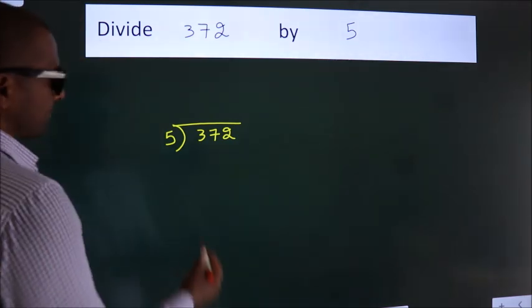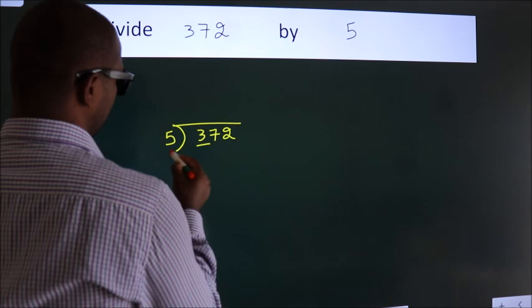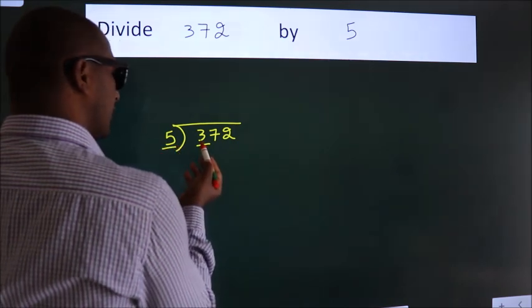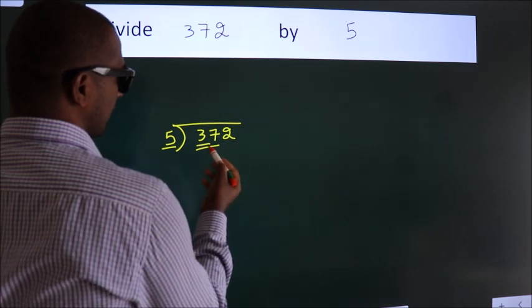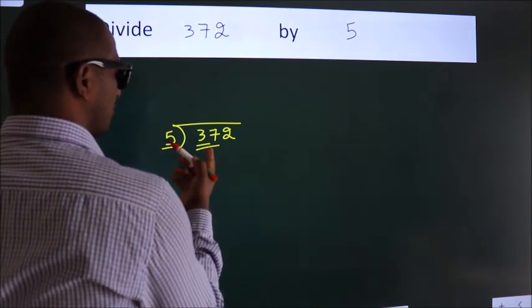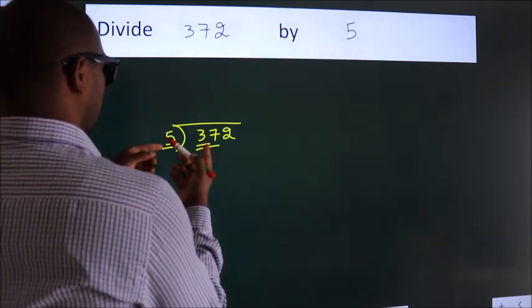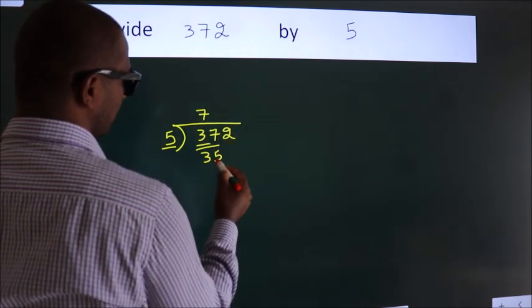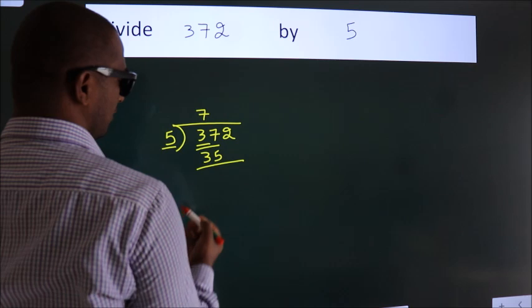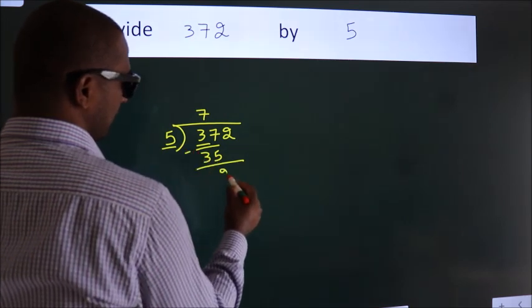Next, here we have 3, here 5. 3 is smaller than 5, so we should take 2 numbers, 37. A number close to 37 in the 5 table is 5 times 7, 35. Now we should subtract. We get 2.